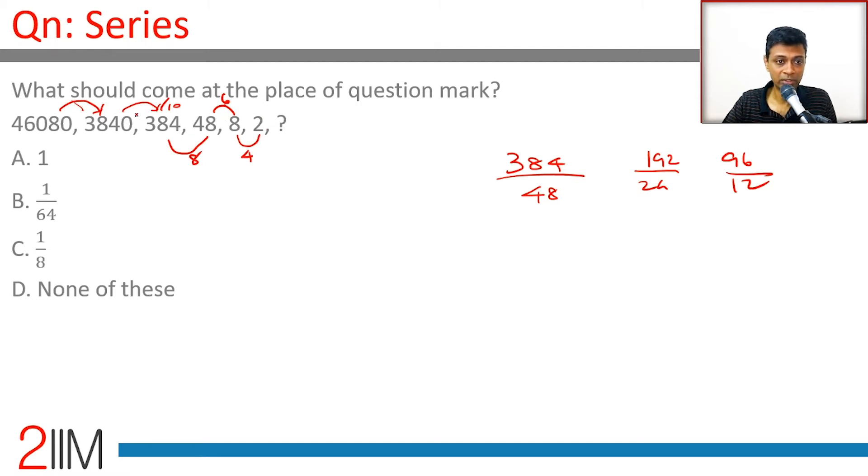Divide by 4, divide by 6, divide by 8, divide by 10. Just want to check whether 3840 into 12 is 46080. 0, 8, 4, 96 plus 400, 0, 10, 36. Yeah, this works. So this is divide by 12, divide by...